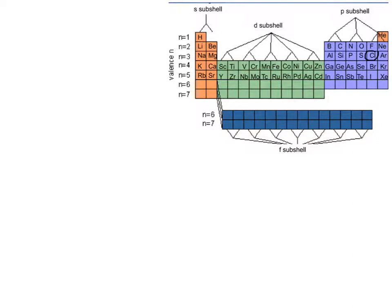Let's do chlorine (Cl). To write the electron configuration for Cl, I'm going to start at the top left-hand corner because I want to write it the long way so that I can exactly see how many electrons are in each shell. So Cl is 1s2, 2s2, 2p6, 3s2, 3p5.